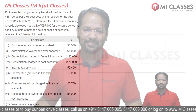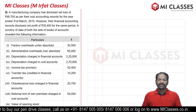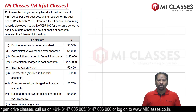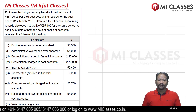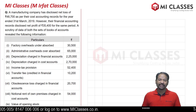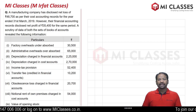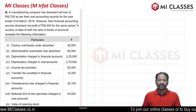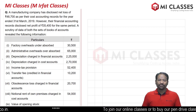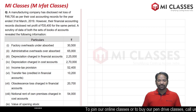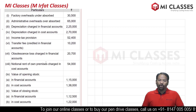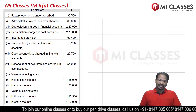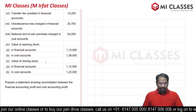Let's start with the question. A manufacturing company has disclosed a net loss of 48,700 as per their cost accounting records for the financial year ending 31st March 2019. However, their financial accounting records disclosed a net profit of 35,400 for the same period. A scrutiny of the data of both sets of books of accounts revealed the following information.